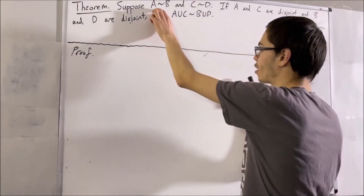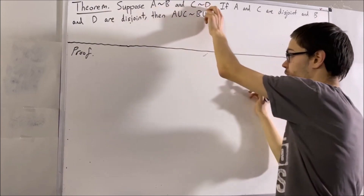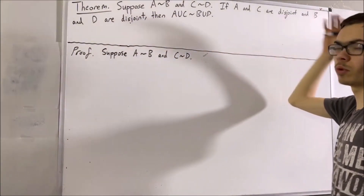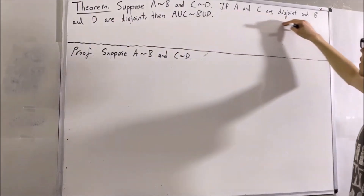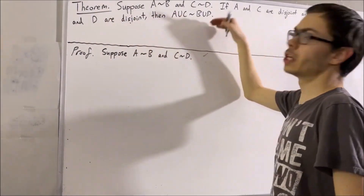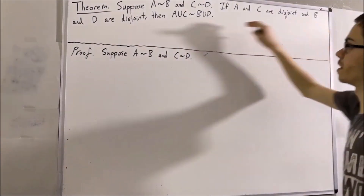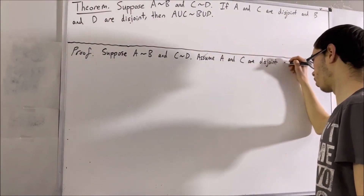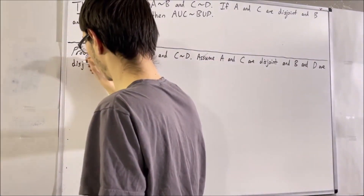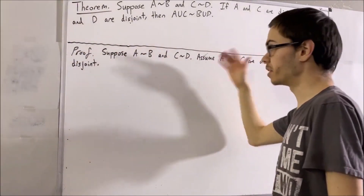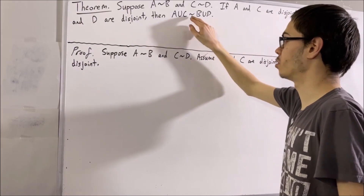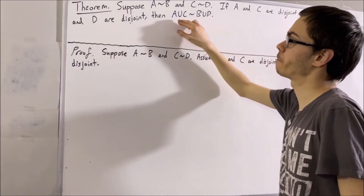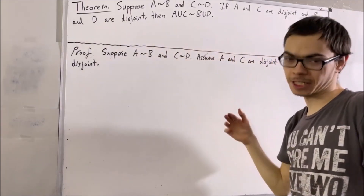Let's start by supposing that A is equinumerous with B and C is equinumerous with D. What we want to do now is prove that if A and C are disjoint and B and D are disjoint, then A∪C is equinumerous with B∪D. That means we want to find a function from A∪C to B∪D that is bijective.